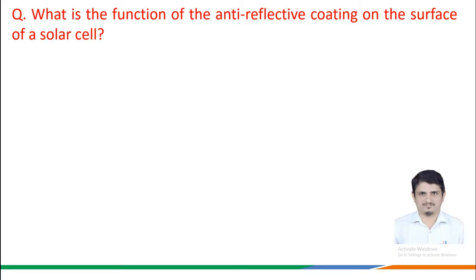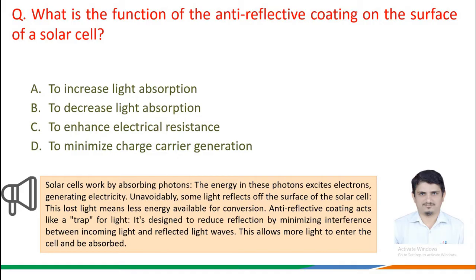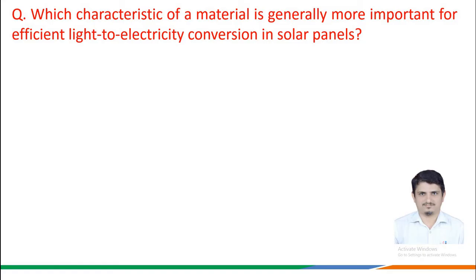What is the function of anti-reflective coating on the surface of a solar cell? Solar cells work by absorbing photons whose energy excites electrons, generating electricity. Some light reflects off the surface, meaning less energy is available for conversion. Anti-reflective coatings act like a trap for light, reducing reflection by minimizing interference between incoming and reflected light waves, allowing more light to enter and be absorbed. The correct answer is to increase the light absorption.